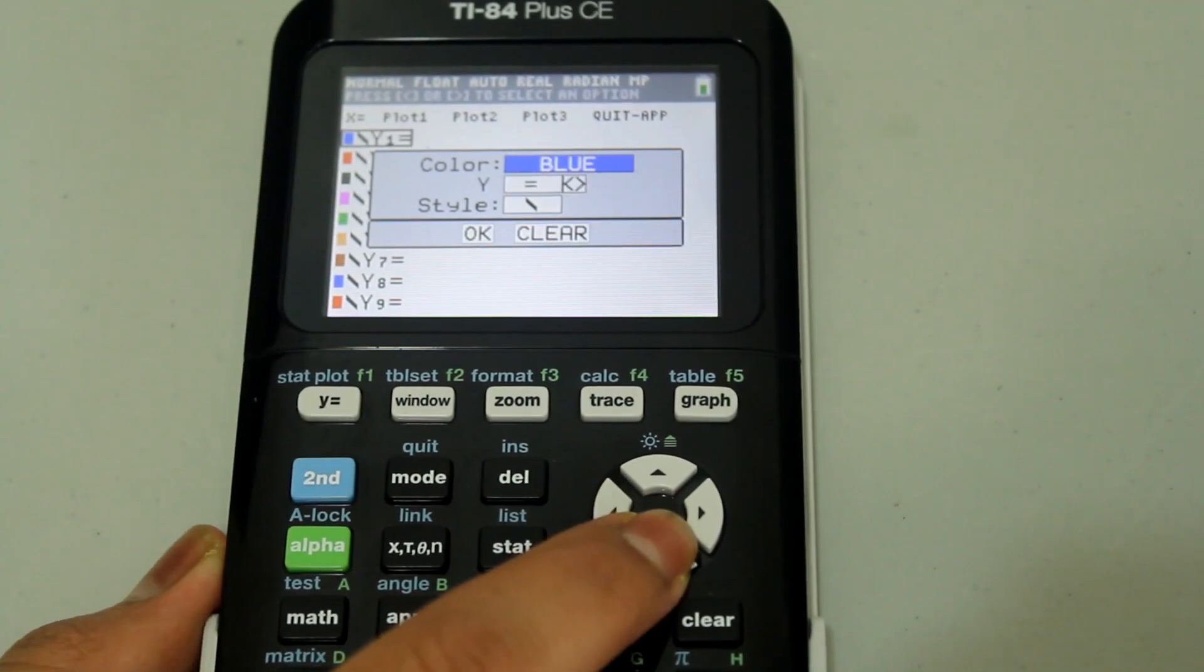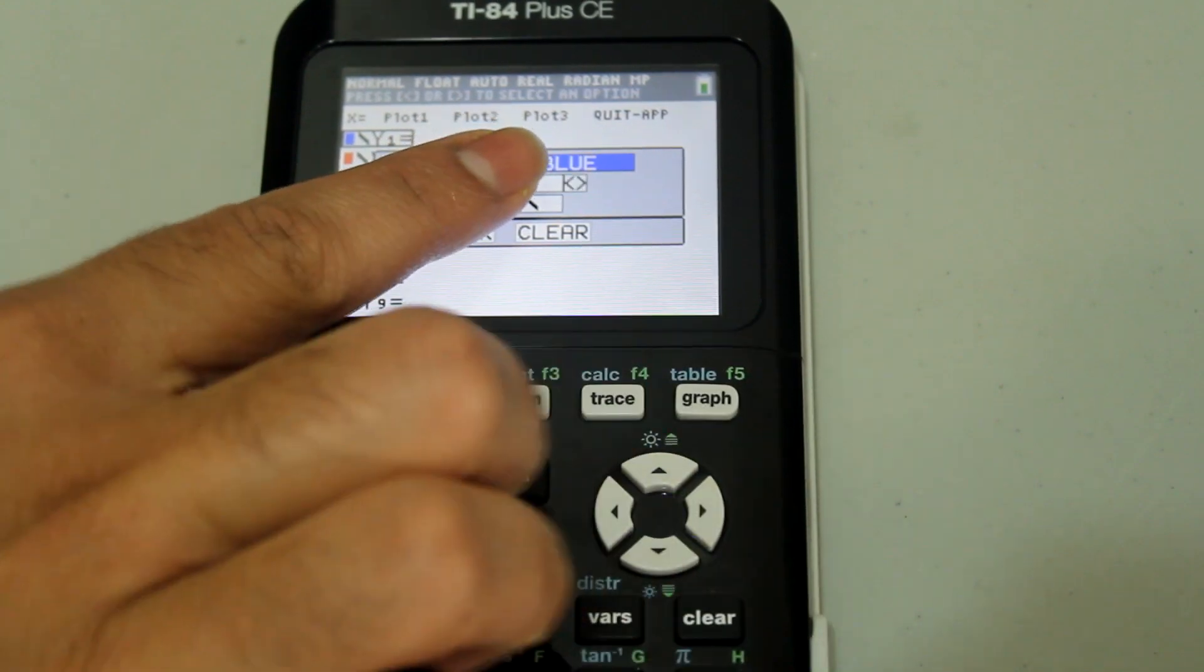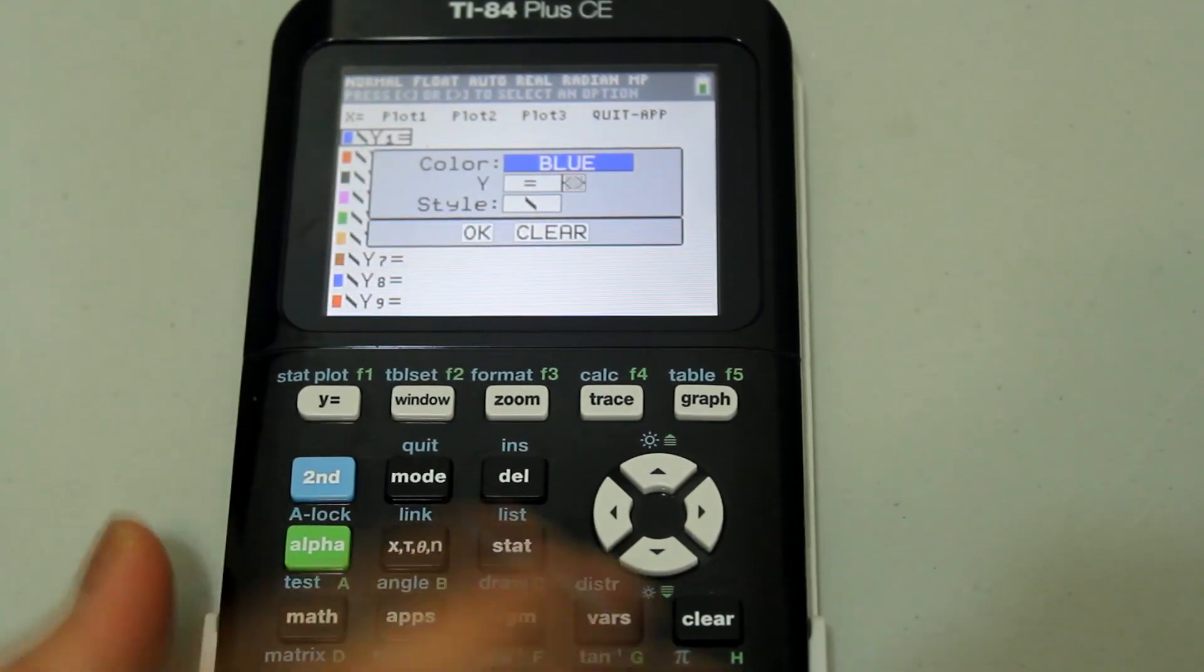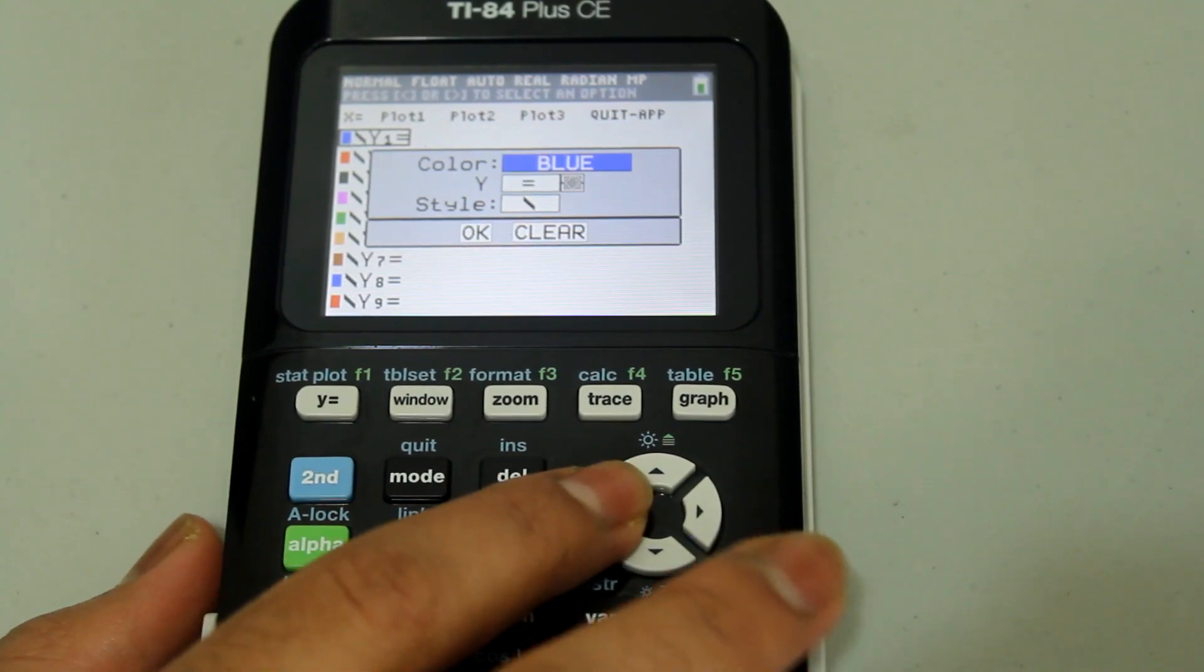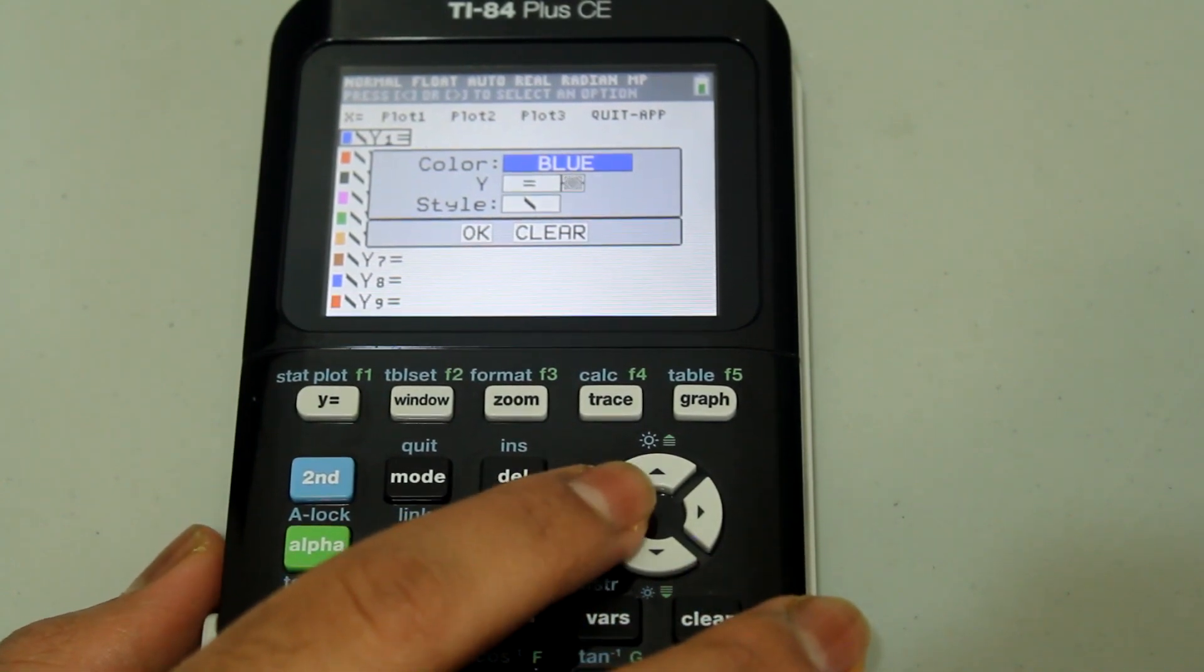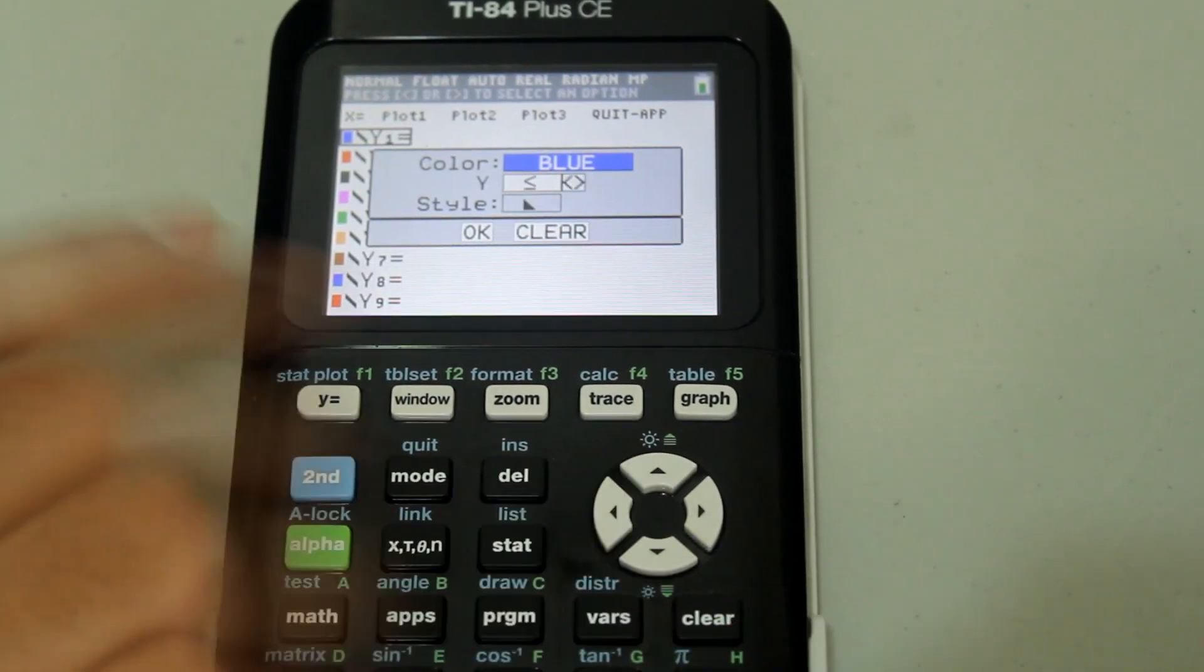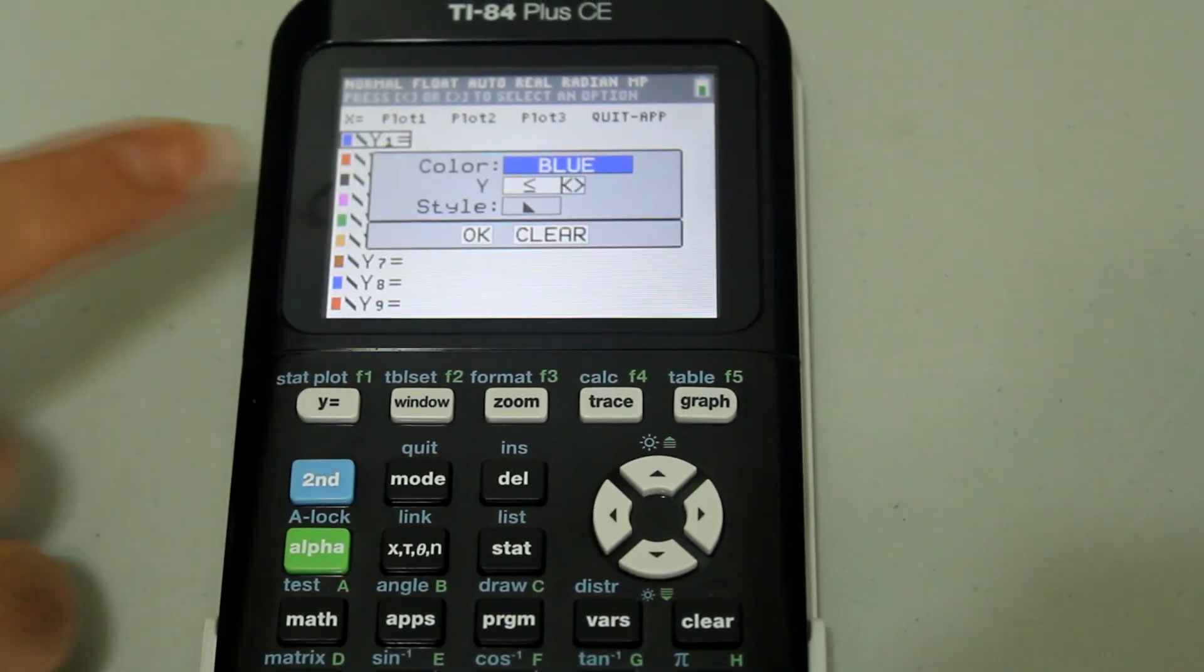Use the down arrow to get these two arrows in opposite direction flashing next to the y equals. And after that, use the right or left arrow to get the inequality that you want. So let's say we want less than or equal to. So right now we have less than or equal to.